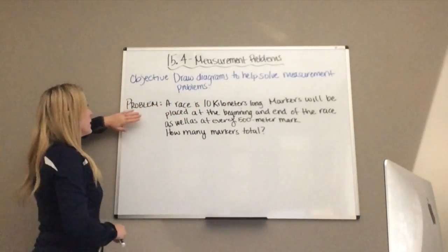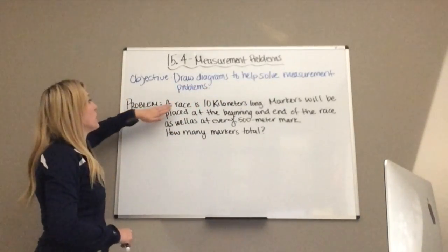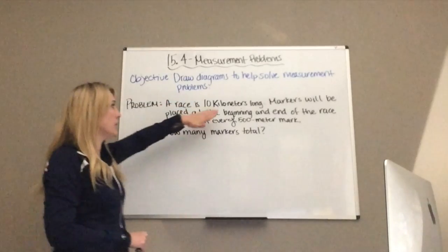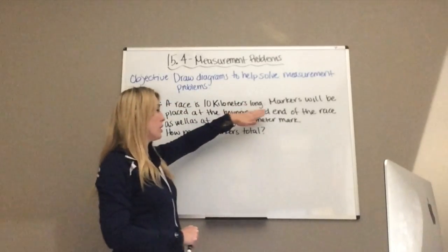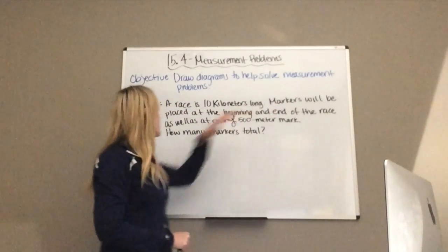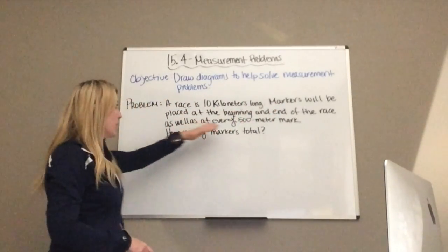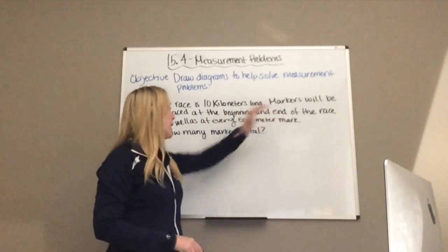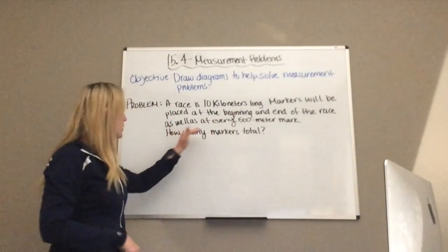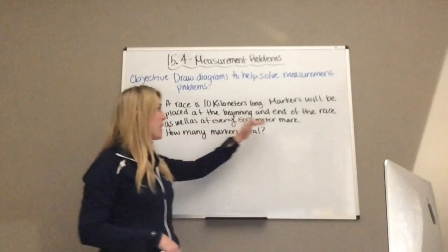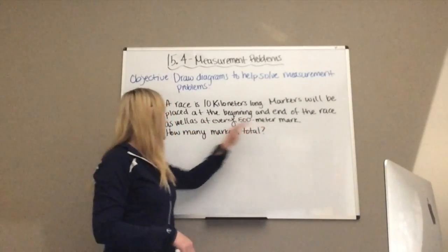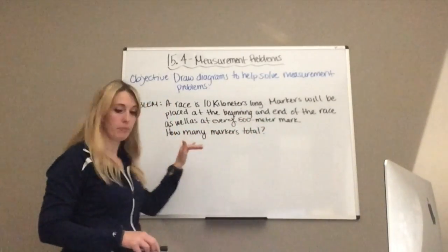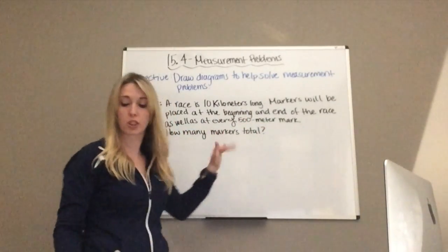And today our problem is: a race is 10 kilometers long. Markers will be placed at the beginning and end of the race, as well as every 500 meter mark. How many markers total?